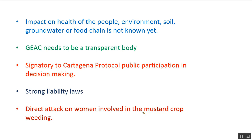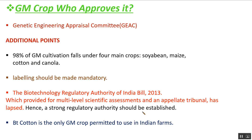India is a signatory to the Cartagena Protocol, which requires public participation in decision-making. There should also be strong liability laws — if a GM mustard crop goes wrong and spreads to all farms, someone must be held responsible. Another concern is the direct impact on women involved in mustard crop weeding, as those women who go to the field to cut weeds would be directly affected.